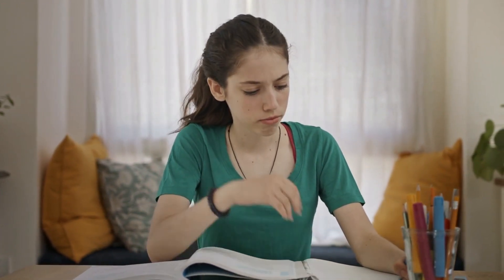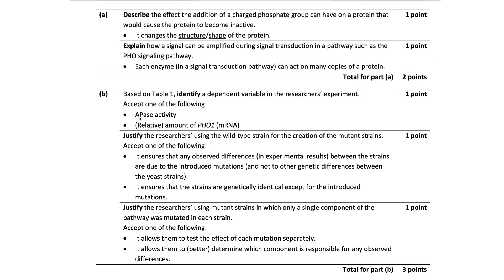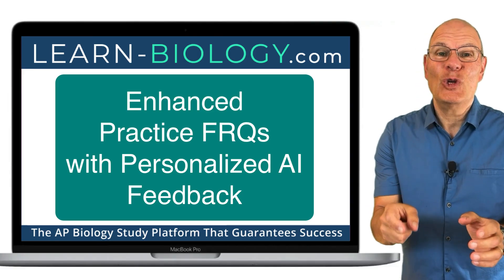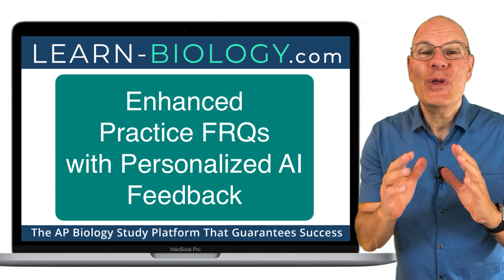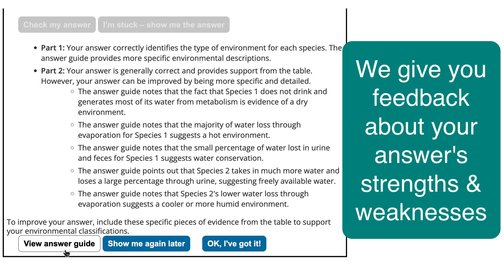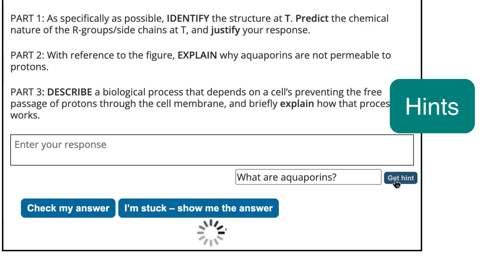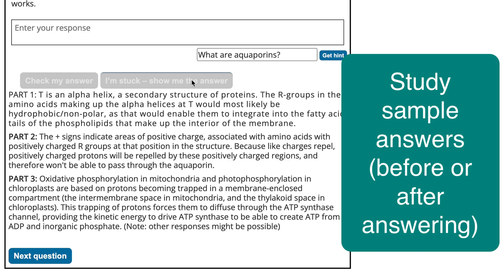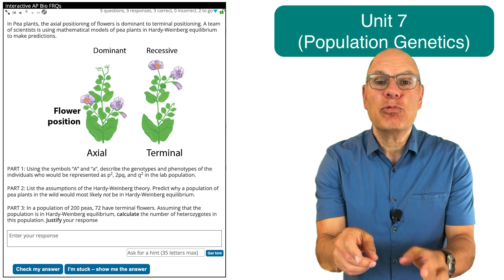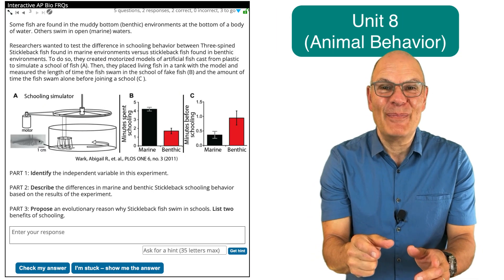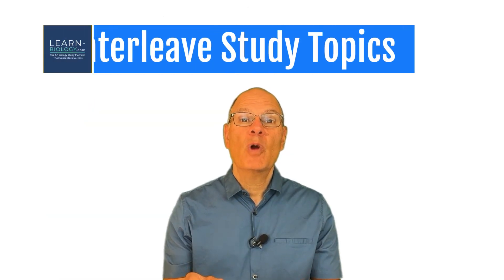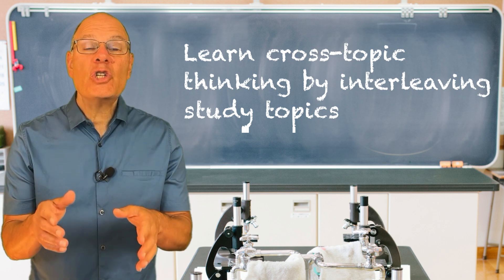Go somewhere you won't be disturbed, turn off your phone, and write FRQ responses by hand, just like you'll have to do on the test. After writing your response, evaluate it using the scoring guides the College Board provides. Do this with as many past FRQs as possible. Another way to become a great FRQ writer is to use the enhanced practice FRQs with AI feedback on learn-biology.com. You read a prompt, type your response, and receive feedback on your answer's strengths and weaknesses. You can ask for hints or study a sample answer. There are dozens of practice FRQs covering every topic in the curriculum. Download the guide for writing great FRQs at apbiosuccess.com/frqs.